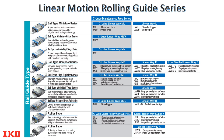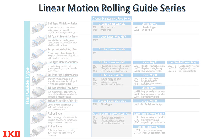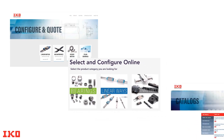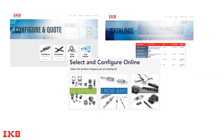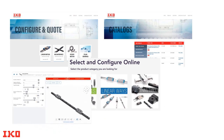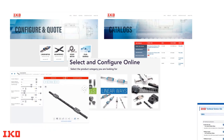Most of the linear guides come with IKO's patented C-Lube maintenance-free feature. Finding the perfect part number, accessing CAD files, data sheets, catalogs, and requesting quotes for your application has never been easier with IKO's online tools. Let us dive in and discover how you can leverage these powerful resources to simplify your search.